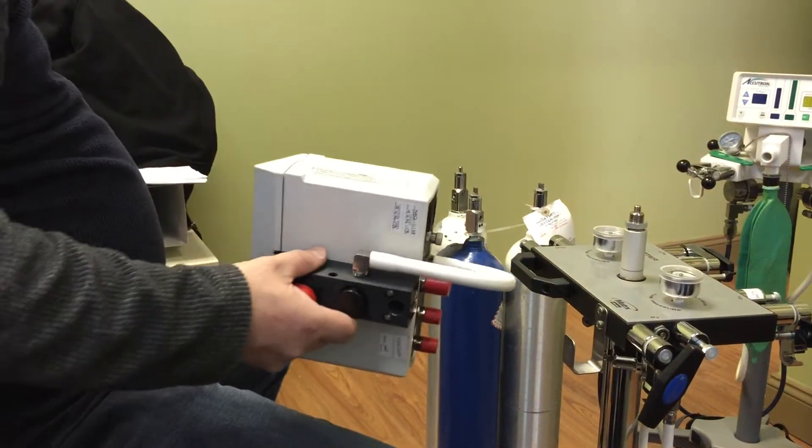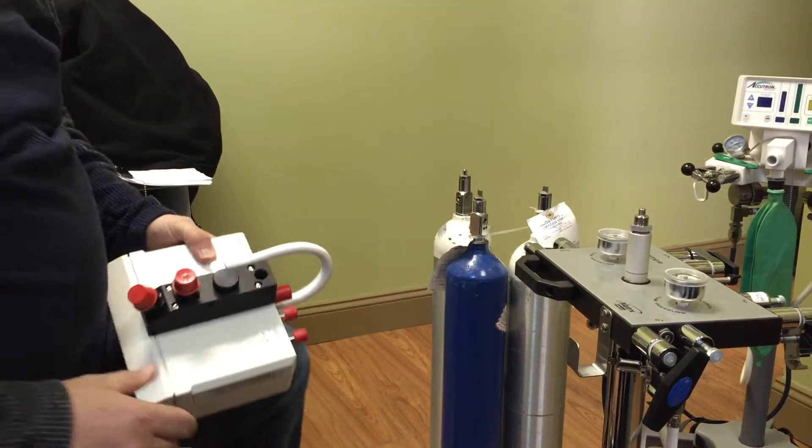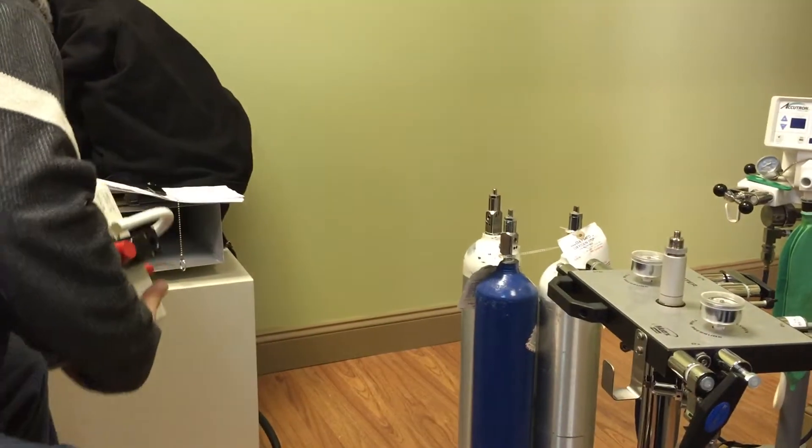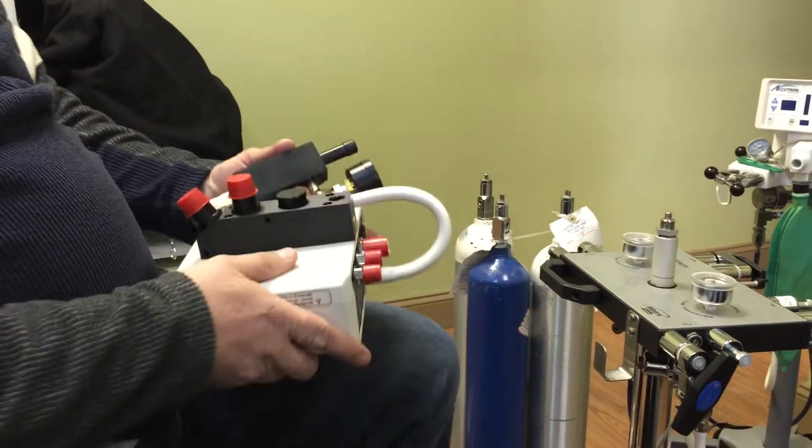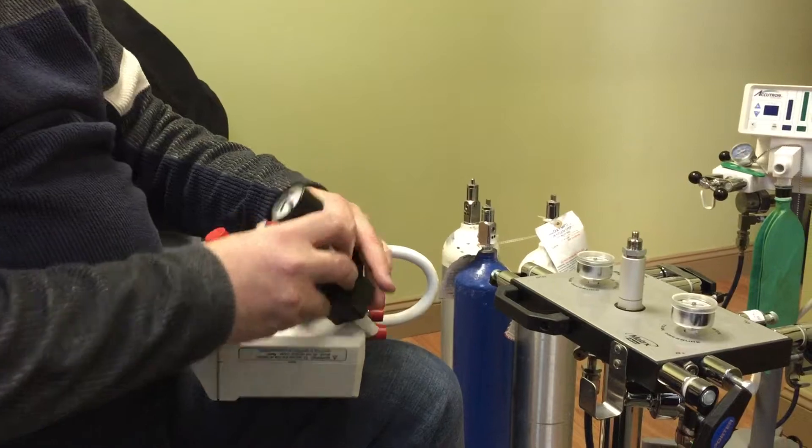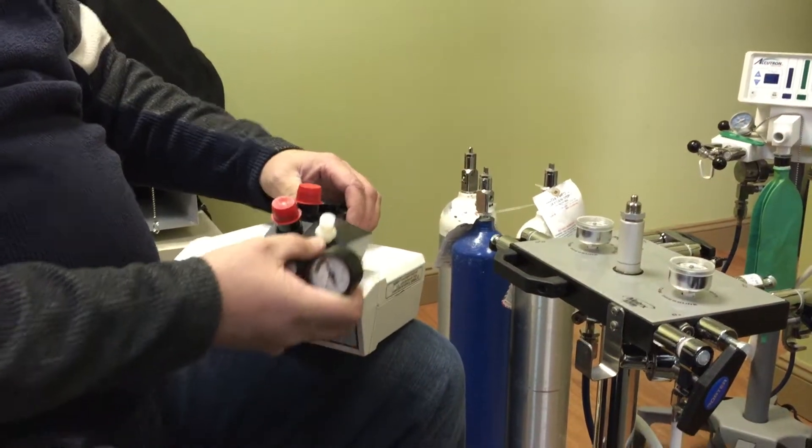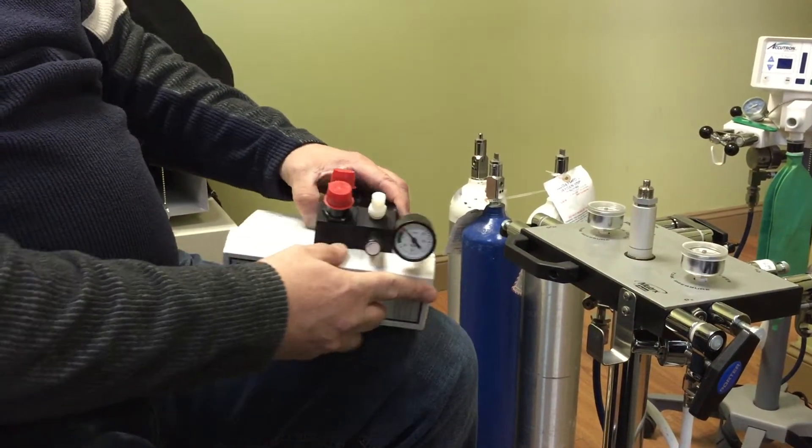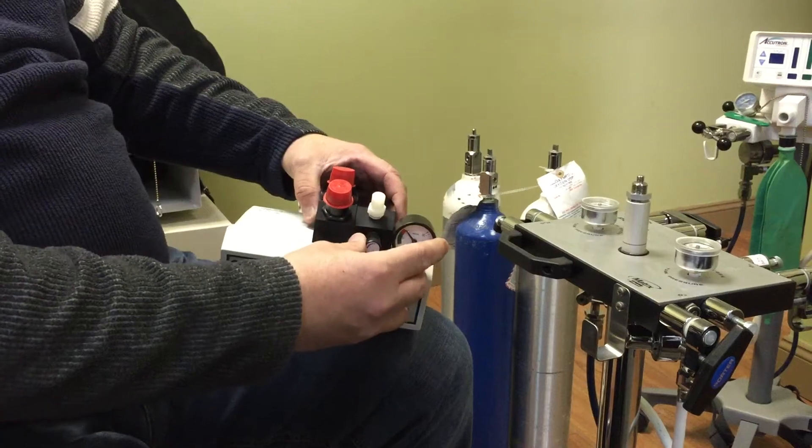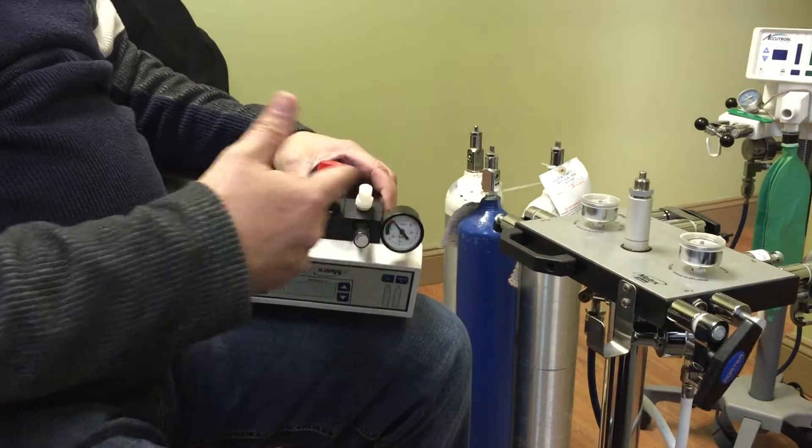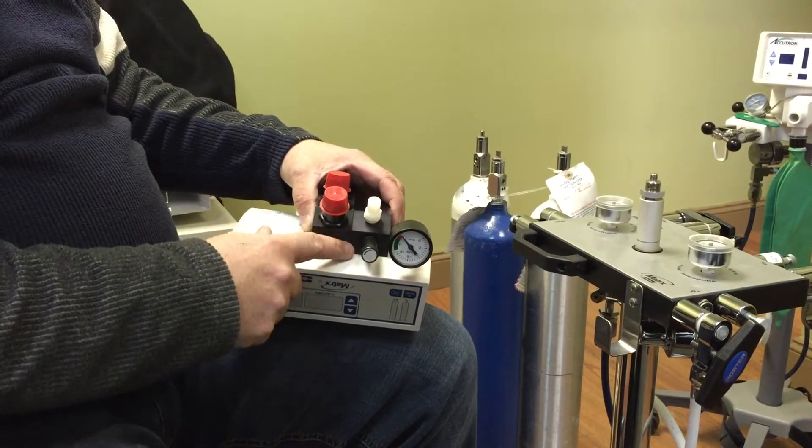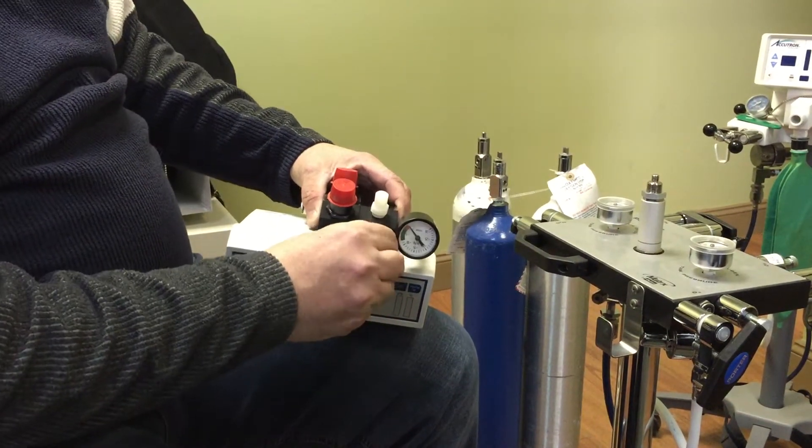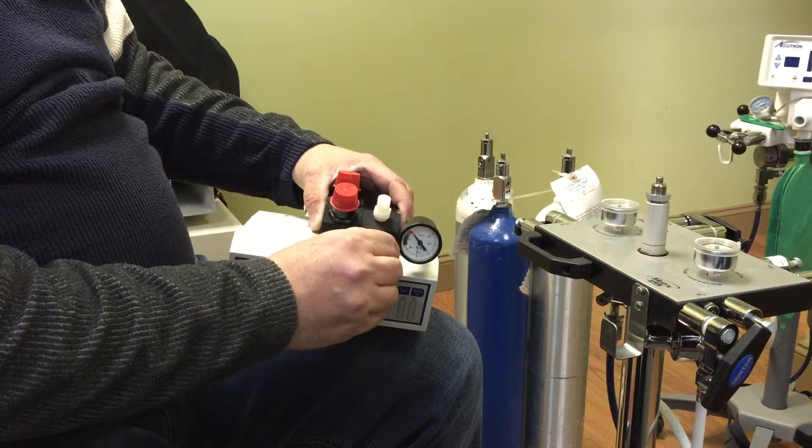So when assembling this, it's always good to actually put on your scavenger control block. Now this sometimes is sold as an option. Most of the time they come with it, but this mounts to the side of the unit. What this does is actually controls the amount of vacuum that's going to be delivered to the nasal hood.